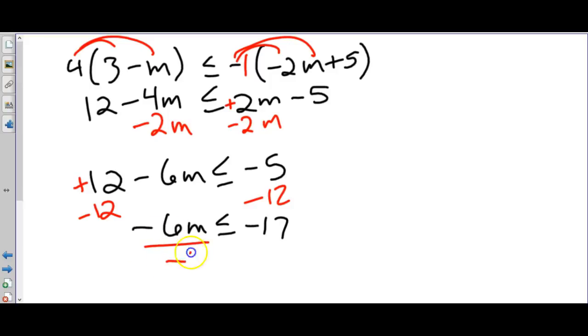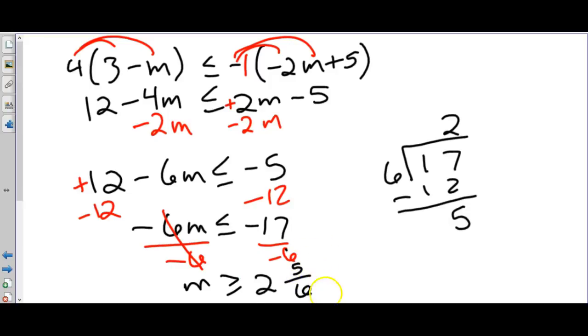Negative 6m we want to divide by negative 6. We've divided by a negative so we flip our inequality sign and again this is not going to come out nicely. So we know negative divided by negative is positive and then 6 goes into 17 two times with a remainder of 5. So we have 2, our remainder was 5 and we divided by 6. So 2 and 5 sixths is our answer in fractional form.